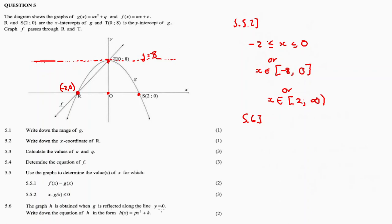5.6, the last question: The graph H is obtained when G is reflected along the line y equal to 0. Write down the equation of H in the form H of x equal to px² + k. This line y = 0 is basically the x-axis. So we reflect G along the x-axis to get H. How do we do that? Multiply the function by negative. H of x is equal to minus one times the function G.